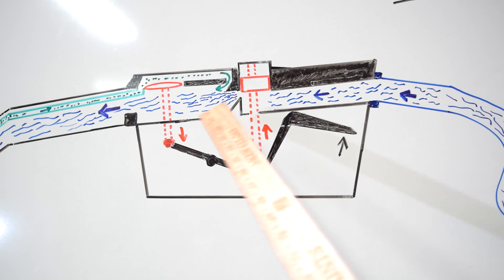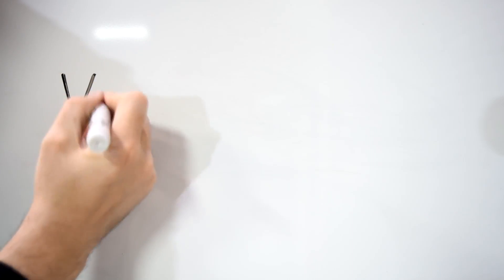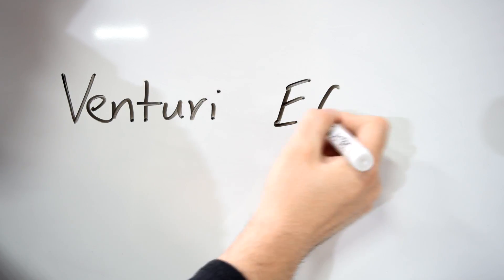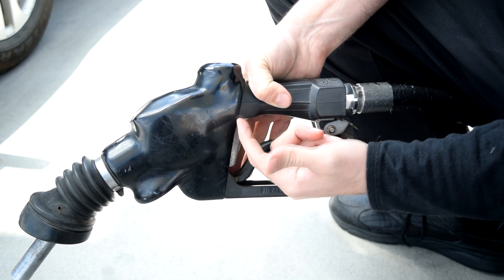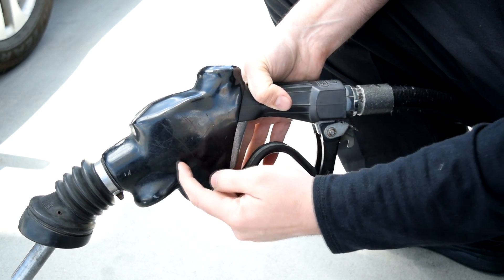This is what's called a venturi effect, and that orifice is usually either a part of the main valve or part of the main body of the nozzle further in.